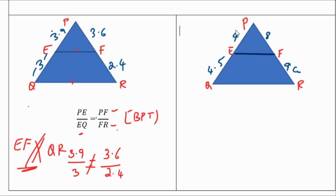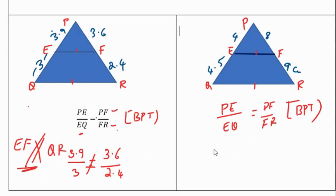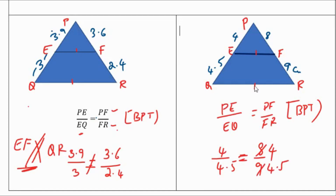Second case: PE = 4 cm, QE = 4.5 cm, PF = 8 cm, RF = 9 cm. We check whether PE/EQ = PF/FR using the Basic Proportionality Theorem. Here 4/4.5 simplifies as 8/9, and 8/9 equals 8/9 — the ratios are proportional. Therefore EF is parallel to QR in the second case. In the first case they were not parallel, but here the sides are proportional so the lines are parallel.